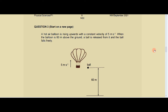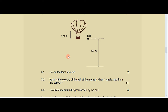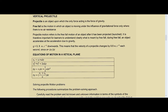We have question three taken from Northwest September 2021 — shout out to Northwest. It goes: a hot air balloon is rising upwards with a constant velocity of five meters per second. When the balloon is 60 meters above the ground, a ball is released from it and falls freely. We have a diagram to show all that. Then 3.1 says: define the term free fall.